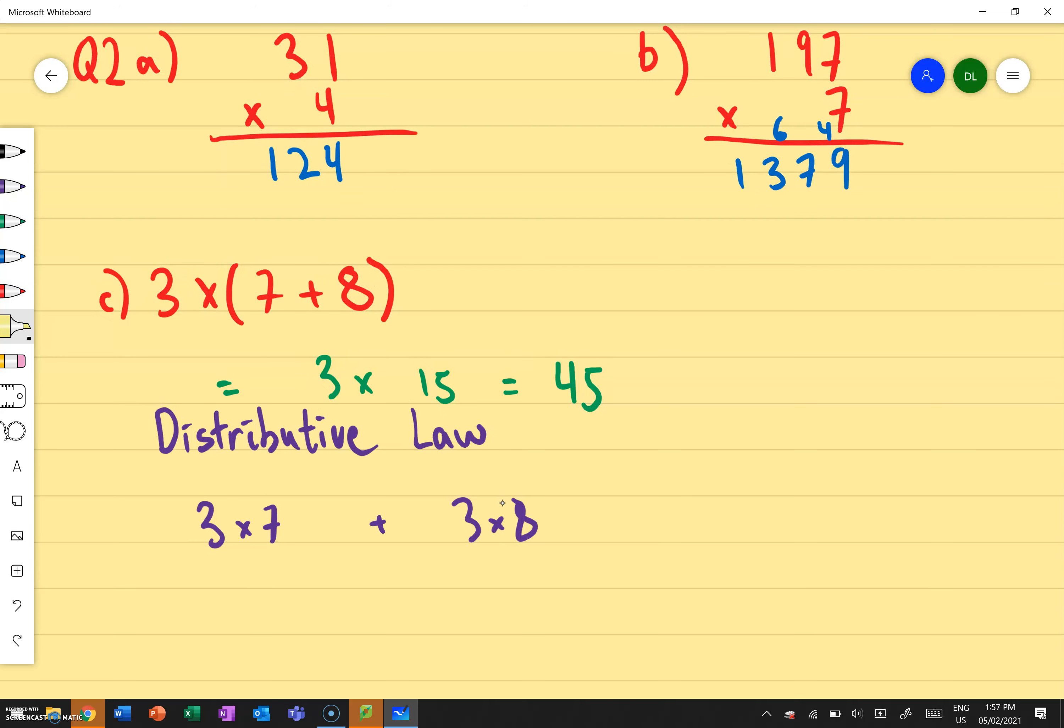So I've got 3 times 7 over here, and that comes from these two numbers there. And I've also got 3 times 8, which is these two numbers over here. We'll give that a go by solving that. What is 3 times 7? 3 times 7 is 21. And what's 3 times 8? 24. Let's add those numbers together. What's 21 plus 24? 45.